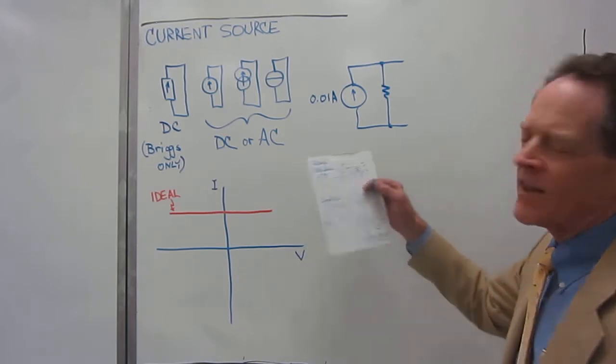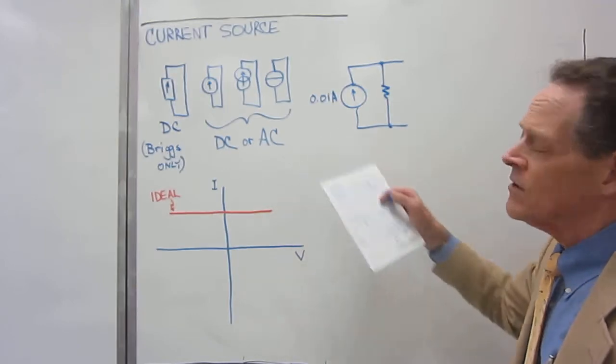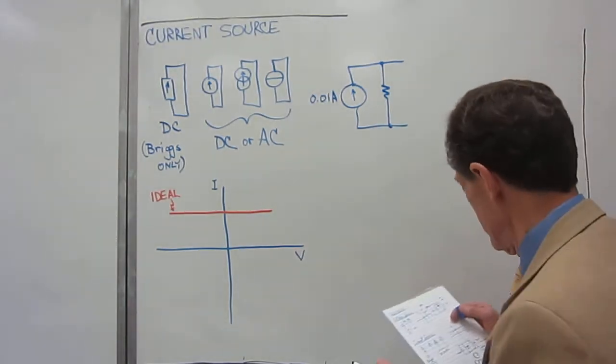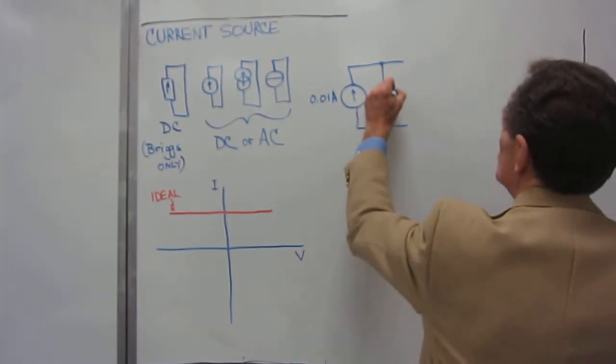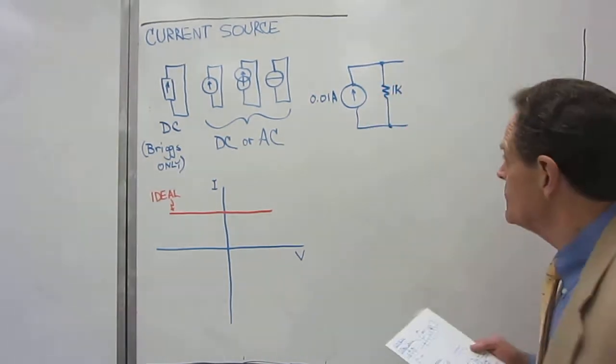And it looks like this, and we show its non-idealness by having a resistor in parallel with the current source. So, in the case of the voltage source, the resistor was in series with it. In the case of a current source, the resistor is in parallel with it. And again, this will not be a very good current source, so I'm going to put this value at 1,000 ohms, 1K.